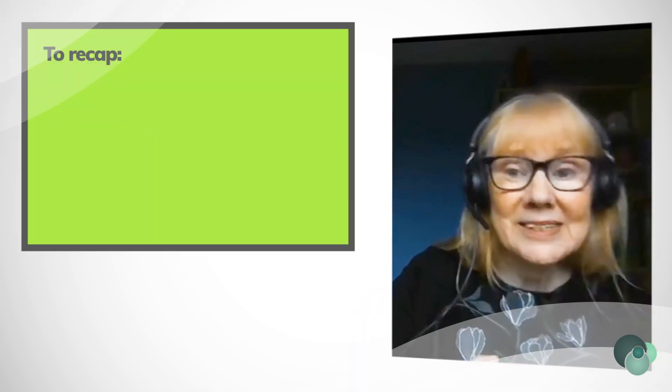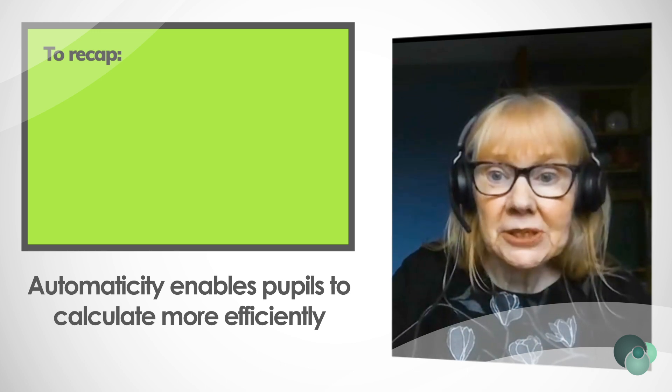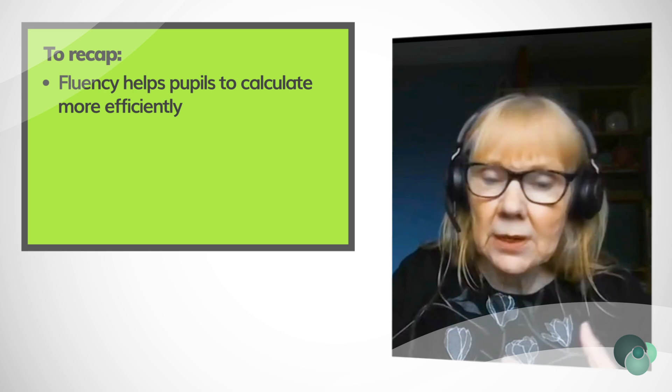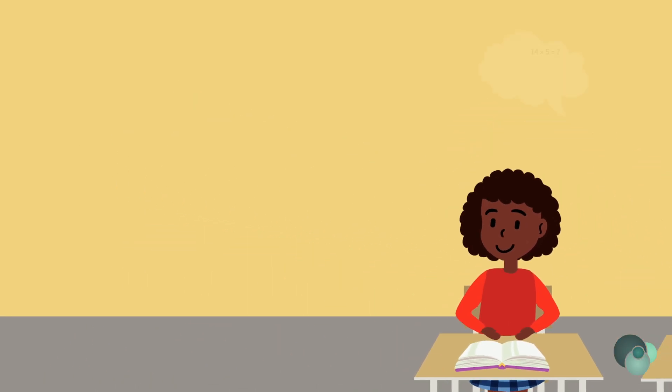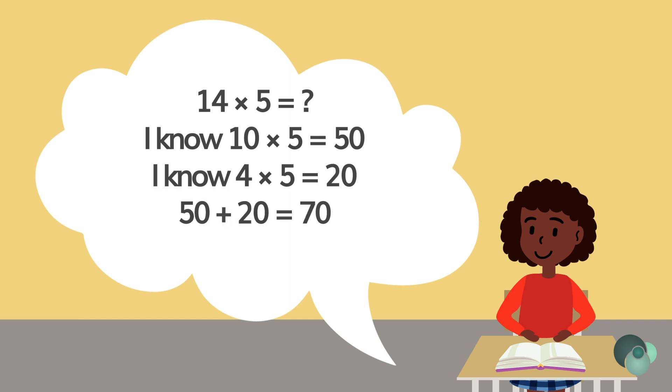Knowing key facts to automaticity enables pupils to calculate more efficiently, even when those facts aren't within the times tables that we learn or the number bonds to 10. For example, 14 multiplied by 5 could be solved by adding the partial products - so I know 10 fives and I know 4 fives and I add them together.